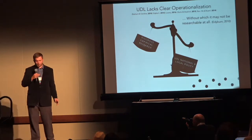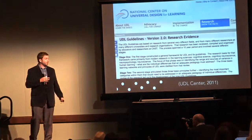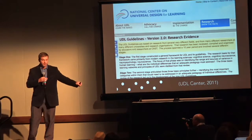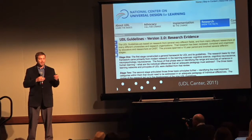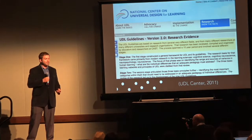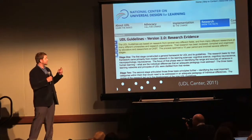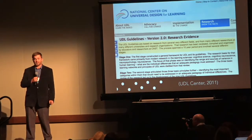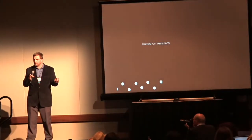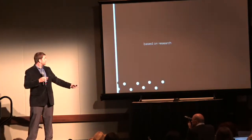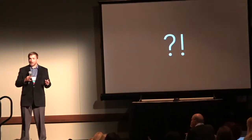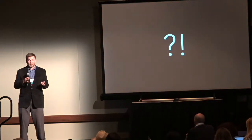If I follow the breadcrumb trail and look at the UDL Center or the National Center on Universal Design for Learning, they have a different narrative. They say the UDL guidelines are based on research from several different fields, from many different researchers at many universities and research organizations — reviewed, compiled, and organized by educators and researchers in a process spanning a 10-year period involving several stages. That sounds research-based to me. So I'm a little unclear. On the one hand, UDL is based on research. On the other hand, it's not researchable. Based on research? Not researchable. I'm not sure how we make sense of this paradox in the literature right now.